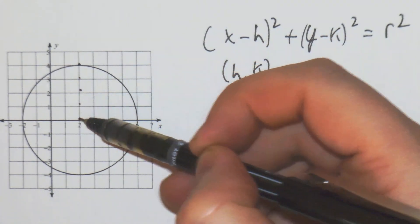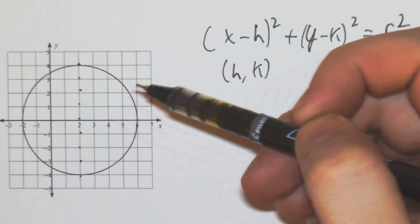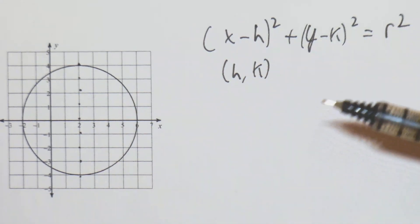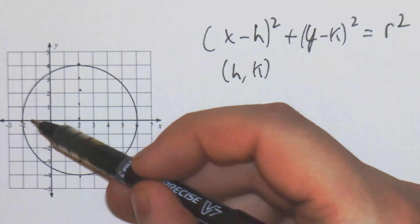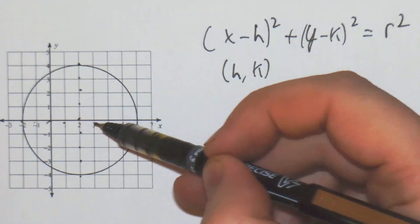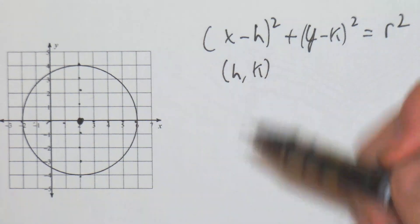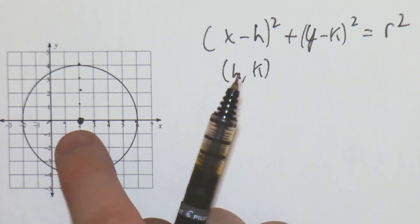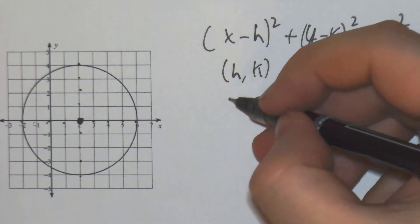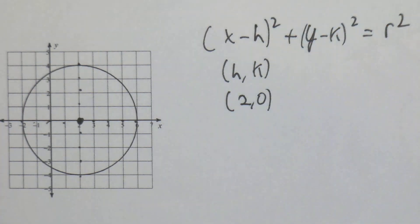Count down 1, 2, 3, 4, 5, 6, 7, 8. So we get a diameter of 8. Let's check the other section: 0, 1, 2, 3, 4, 5, 6, 7, 8. So our center is going to be at (2, 0).